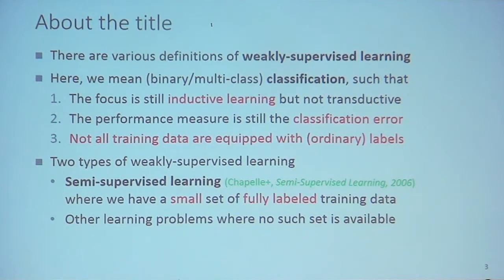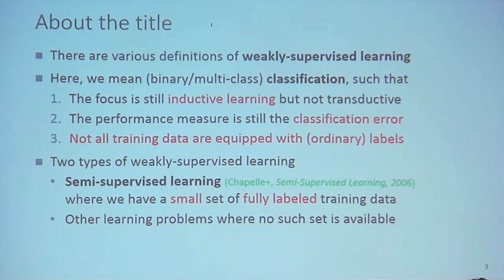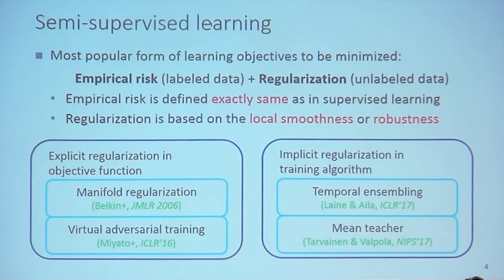The first type is semi-supervised learning. In semi-supervised learning, we are given some big dataset but still have a small set of fully labeled training data. In all other learning problems we consider, there are no such sets for training. We know that in any weakly supervised learning task we must have some kind of labeled data.